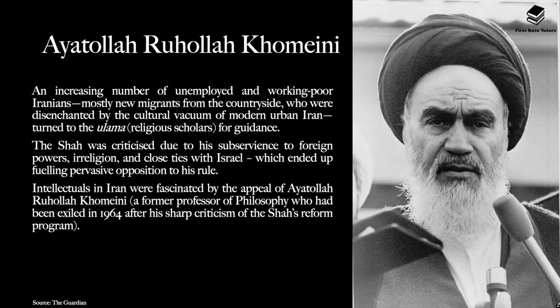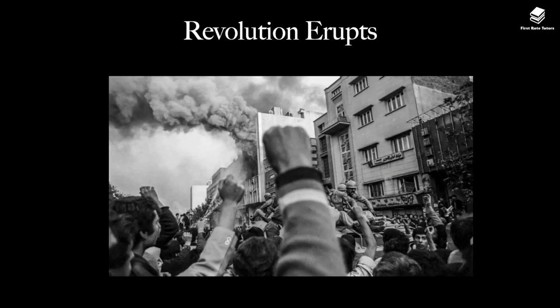A key figure in the success of the Iranian Revolution was Ayatollah Ruhollah Khomeini. An increasing number of unemployed and working-poor Iranians, mostly new migrants from the countryside who were disenchanted by the cultural vacuum of modern urban Iran, turned to the ulama — the religious scholars — for guidance. The Shah was criticised due to his subservience to foreign powers, irreligion, and close ties with Israel, fuelling pervasive opposition to his rule. Intellectuals in Iran were fascinated by the appeal of Ayatollah Khomeini, a former professor of philosophy who had been exiled in 1964 after his sharp criticism of the Shah's reform programme. He ultimately played a significant role in the eruption of revolution.